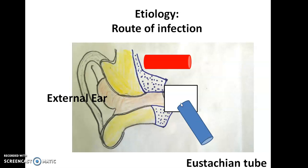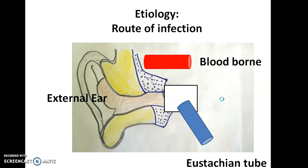Normally, the Eustachian tube is for ventilation of the middle ear and drainage of mucus secretion from the middle ear. Infection can also come from the blood-borne route — if bacteria have gained access to the bloodstream, that is called septicemia, and it can spread anywhere in the body, even into the middle ear.